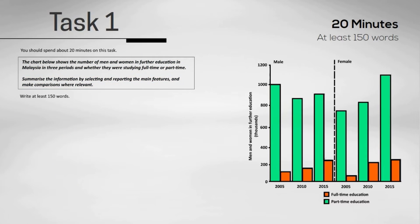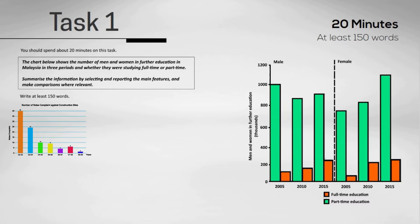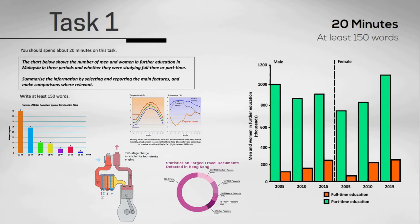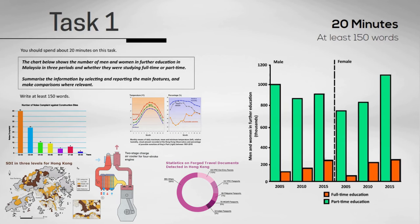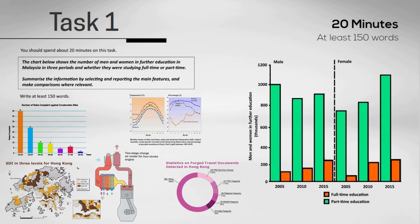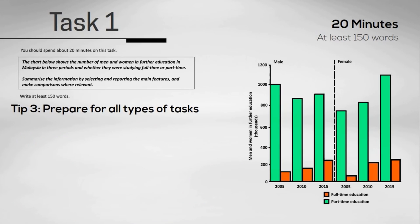Remember that you might not get a bar chart. It could be a pie chart, or a line graph, or a combination, or different charts. It could be a diagram describing a process, or it could be a map, or a plan. So tip number 3 is, don't just prepare for one type of task, be ready for any of them.